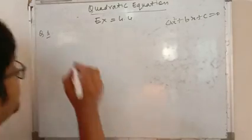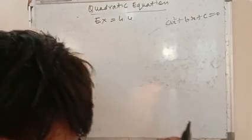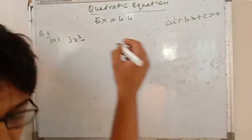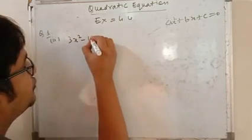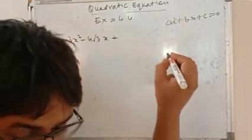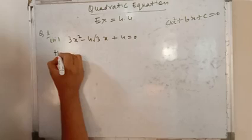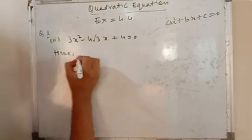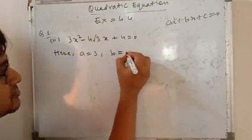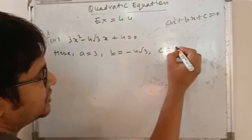What is that? 3x² - 4√3x + 4 = 0. So here a equals to 3, b equals to -4√3, c equals to 4.